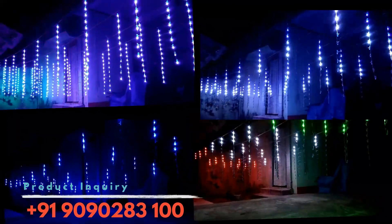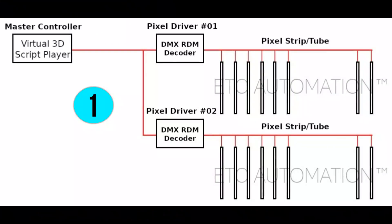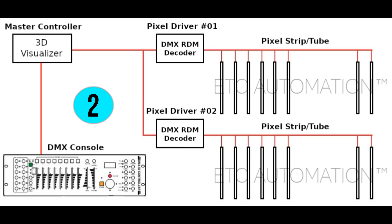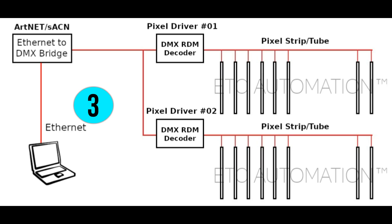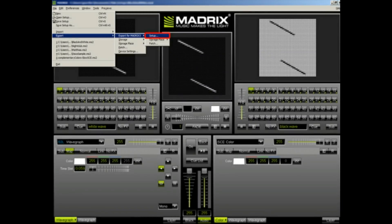The 3D pixel LED animation controller is available in three variants. The first is the virtual 3D script player — it is the most economical in class, mostly used in ceiling decoration for buildings and roads. The second is DMX user-controlled, mostly used in DJ nightclubs, TV studios, and stage programs. The third is based on Artnet and SACN protocol, using third-party application software like Madrix.